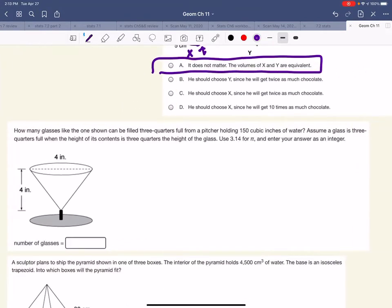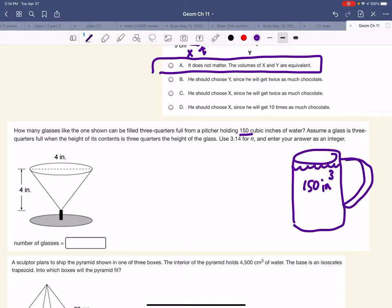Next one. It says, how many glasses like this one can be filled three quarters full from a pitcher? So we already know there's a pitcher over here that has 150 cubic inches of water in it. Okay, so we're trying to figure out how many of these little cups we can fill up. We have to fill them three quarters of the way full. So three quarters of four would be three inches. So we would be able to fill it up three inches high.